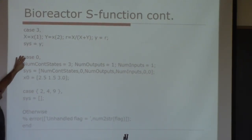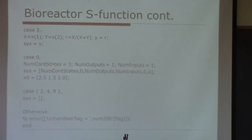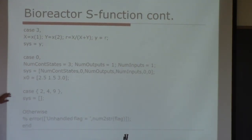Here's an example. You have this statement that says case 0, and it specifies the number of continuous states — in other words, how many differential equations do you have. Simulink allows you to simulate either continuous or discrete differential equations; we have no interest in discrete here. For the problem I'm going to talk about, we have three differential equations, so you specify the number of continuous states to be three. It has one output and one input, and you return this in a vector called sys.